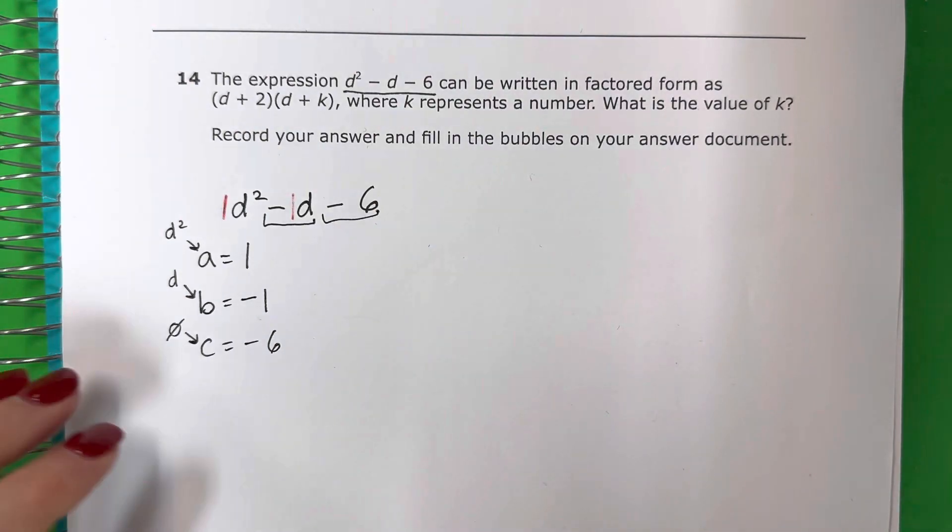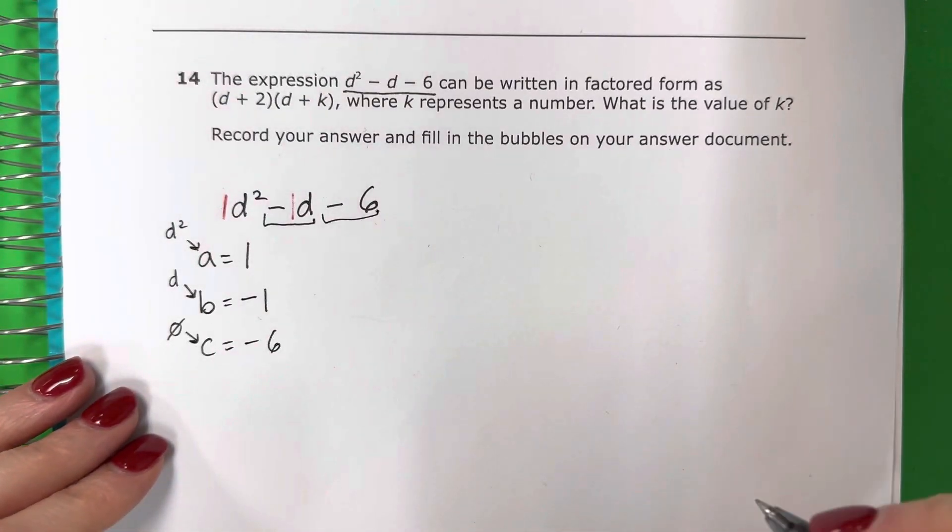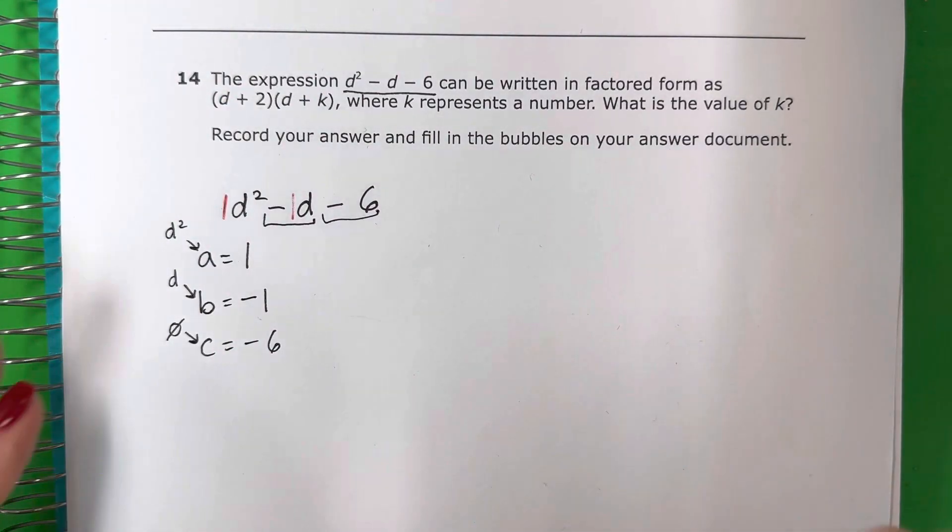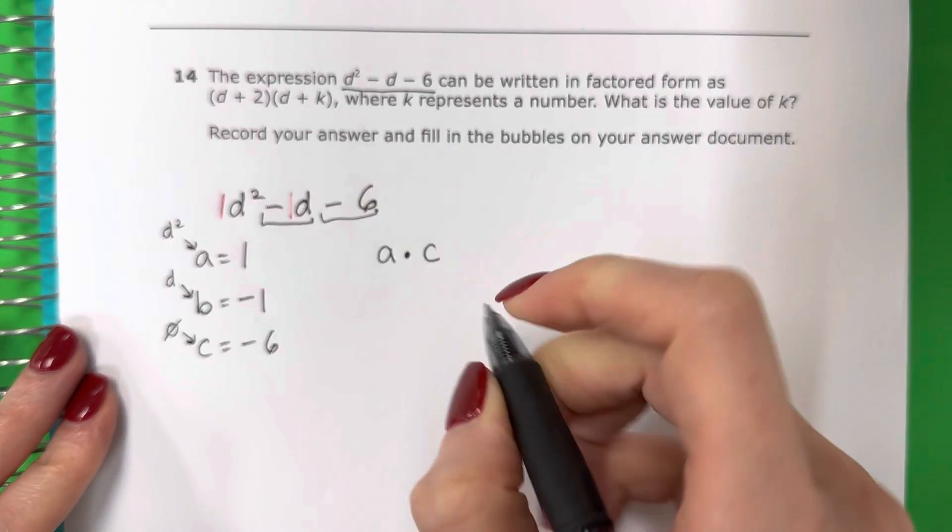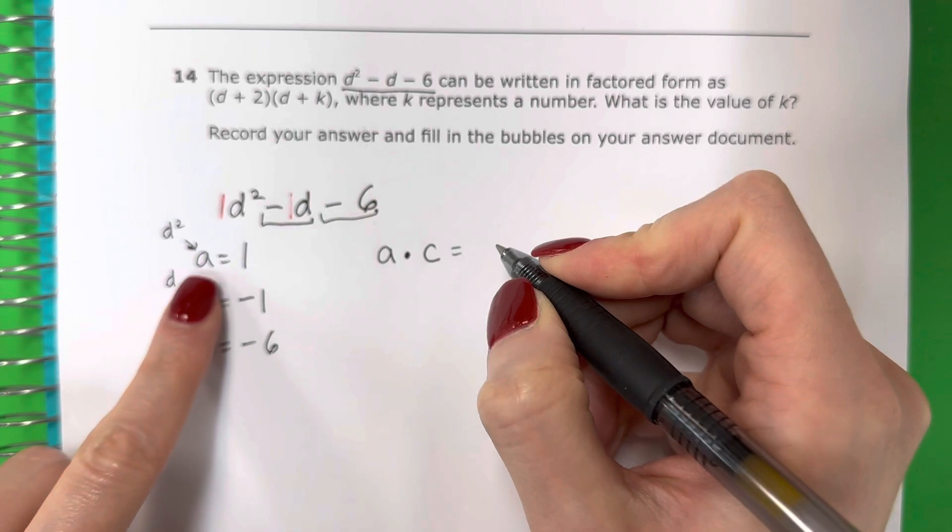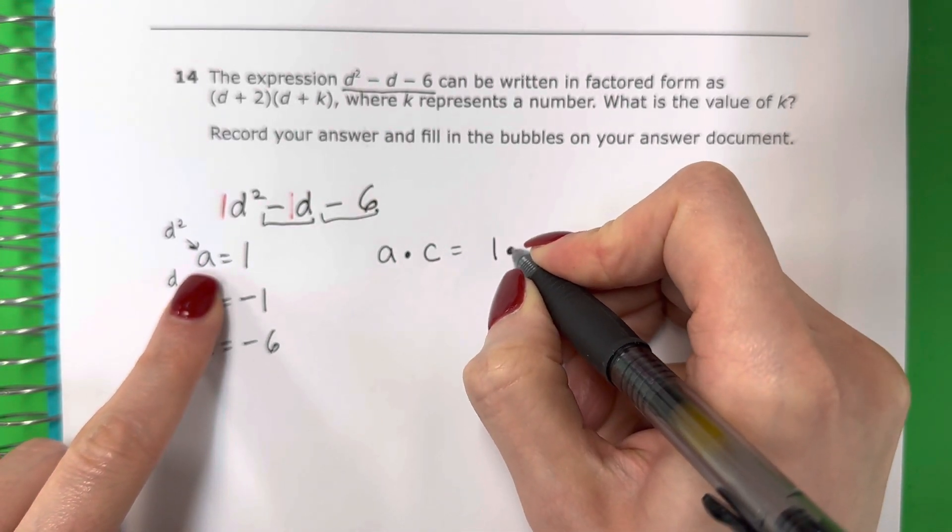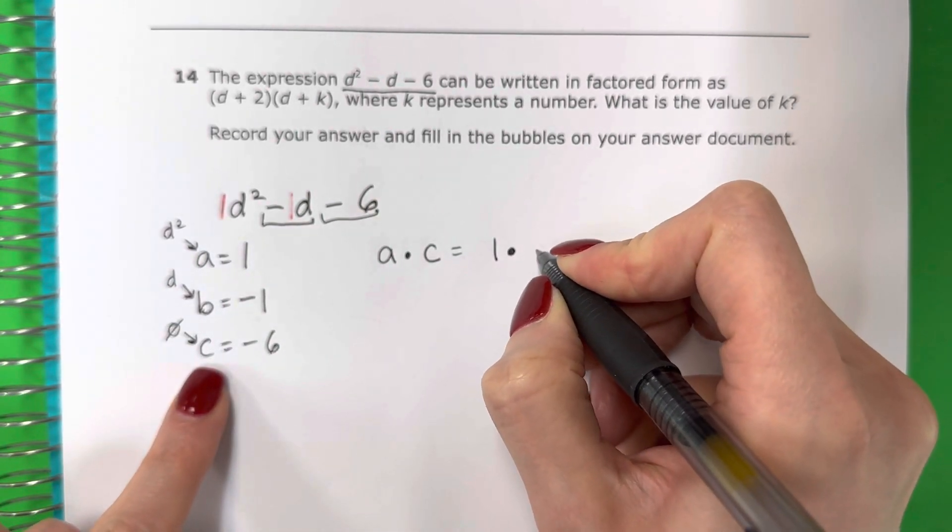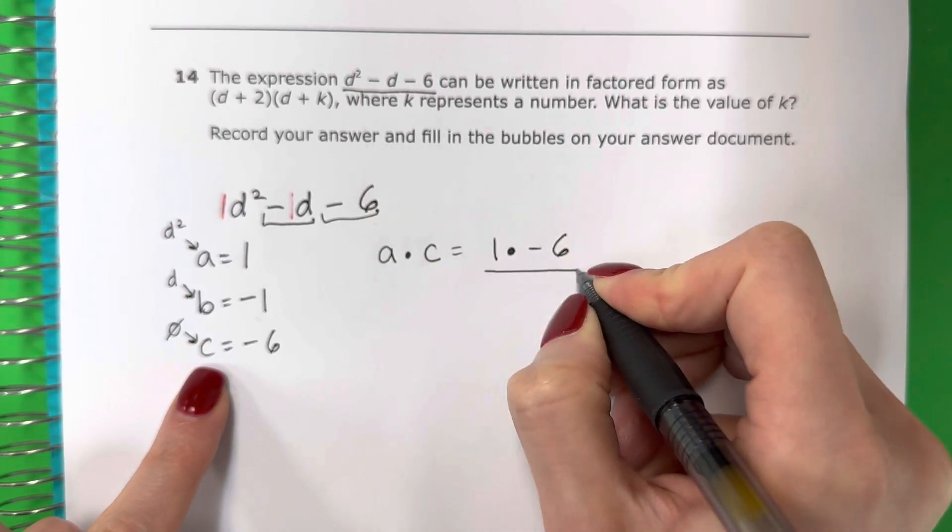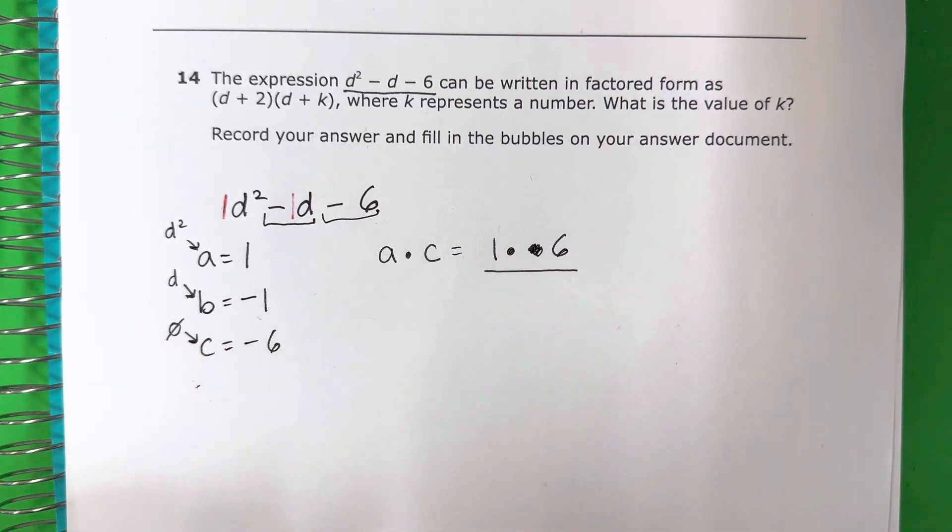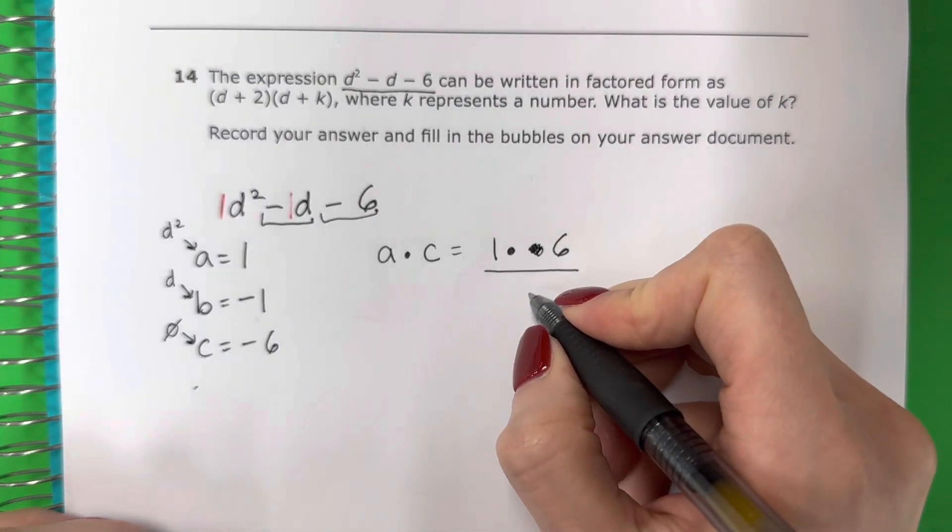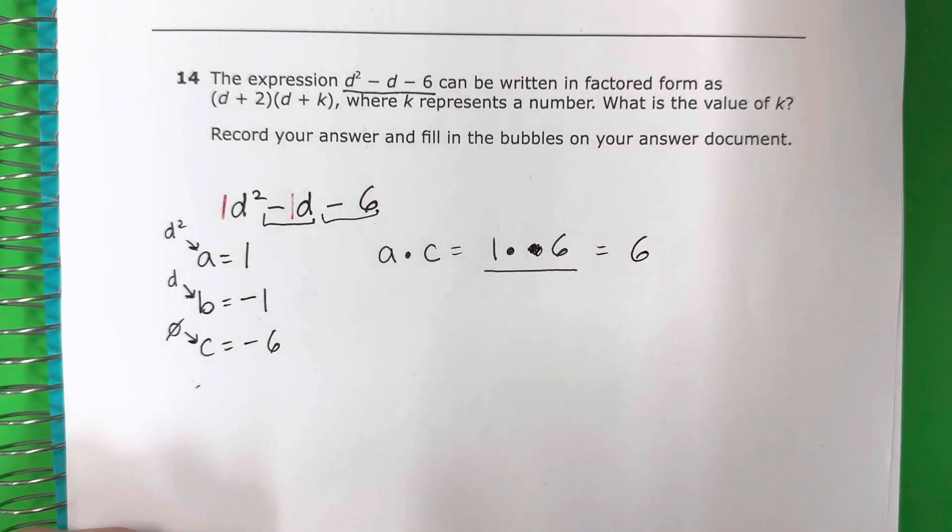Okay, so the first thing we're going to do is we're going to do a times c. La primera cosa es que vamos a hacer a por c, a times c. So that would be a, 1, times c, negative 6. One time, let's ignore the negative right now. Vamos a ignorar el negativo por ahora. So 1 times 6, 1 por 6, that is 6. Es igual a 6.